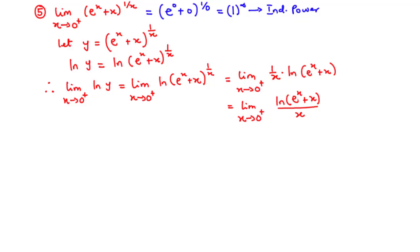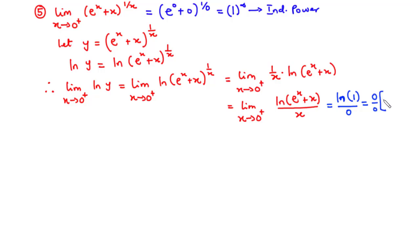We can also write this as the limit as x approaches 0 from the right of ln(eˣ + x) divided by x. Let's try direct substitution: ln(e⁰ + 0) = ln(1) = 0, and the denominator is 0, so we have 0 over 0 — an indeterminate quotient. Therefore we can apply L'Hôpital's rule.